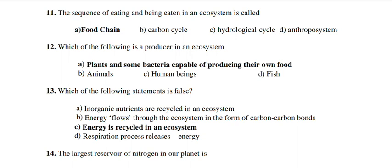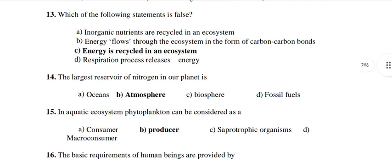Inorganic nutrients are recycled in the ecosystem — that is correct. Energy flows through the ecosystem in the flow of carbon bonds — also correct. Respiration process releases energy — also correct. But 'energy is recycled in an ecosystem' is wrong, because energy is not recycled. The largest reservoir of nitrogen on our planet is the atmosphere.